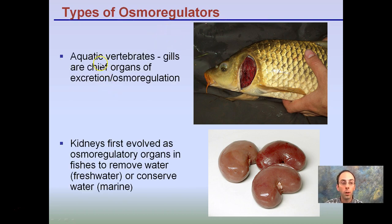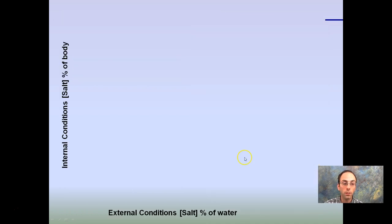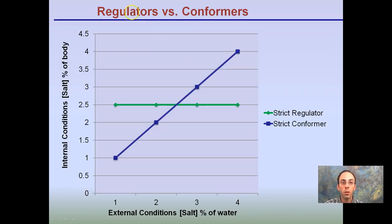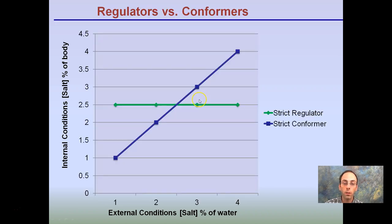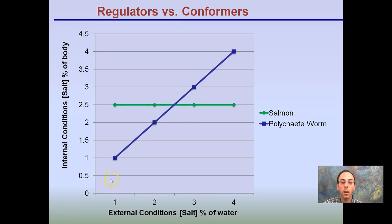Types of osmoregulators — in aquatic vertebrates, gills are the chief organs for excretion, and kidneys have also evolved as osmoregulatory organs in fishes to remove or conserve water. In graphical form: if you're a strict regulator, it does not matter what the external conditions are — your internal conditions will be strictly regulated and remain the same. If you're a strict conformer, as the external environment increases, so does your internal environment. Salmon are strict regulators, while a worm would be a strict conformer. Regulators maintain homeostasis; conformers simply change with the environment.